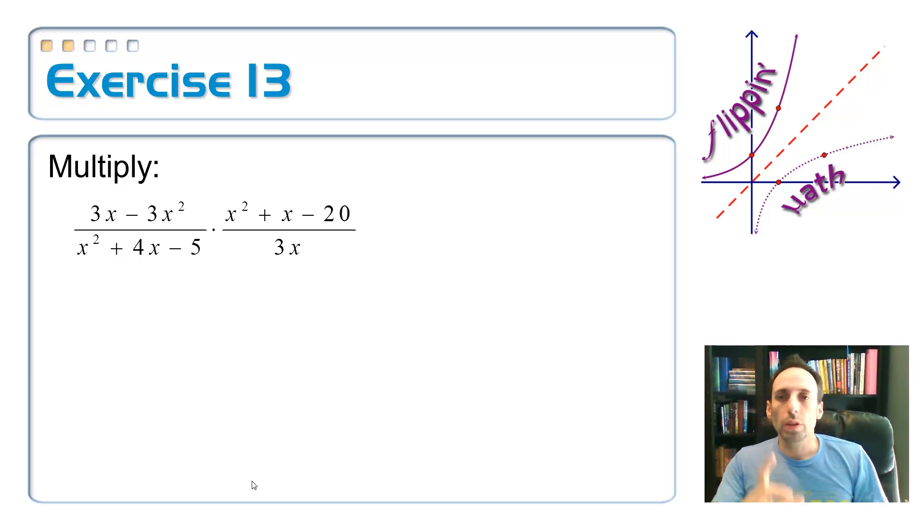Let's see it on this one. What do you think I'm going to have to do first? I'm going to have to factor. Let's factor the top and let's factor the bottom. On the first one, it's just a binomial, and they have a common factor of 3x. So let's factor that out. 3x times in parentheses I'm going to have 1 minus x.